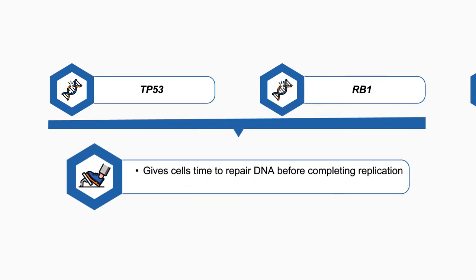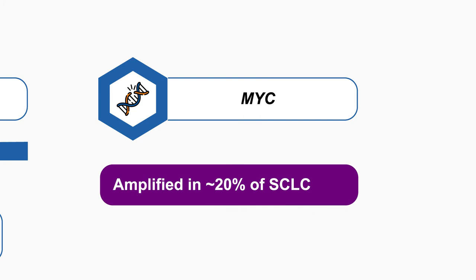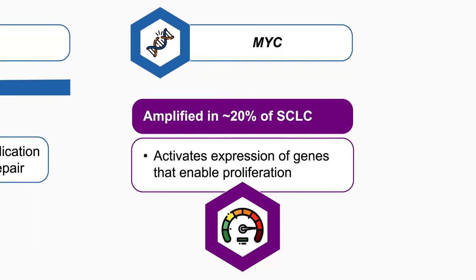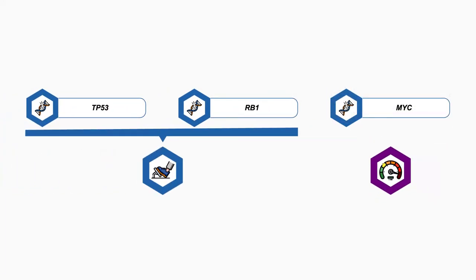In a sense, P53 and RB1 are both like brakes for cells moving forward with significant genomic alterations. By hitting the brakes, they allow cells time to repair DNA before completing replication. When those brakes are broken through mutations and loss of function, it prevents cells from halting replication to allow for repair. At the same time, MYC is amplified in about 20% of small cell lung cancers. MYC proteins activate expression of genes that enable proliferation — like pushing the gas pedal to drive faster through replication. The majority of small cell lung cancers therefore have broken brakes and many also have MYC amplification, further pushing cells into replication and more active disease progression.